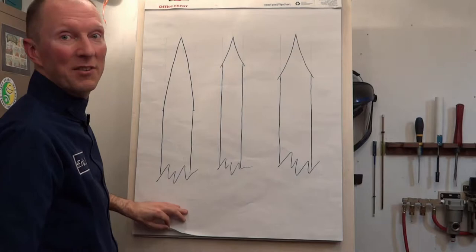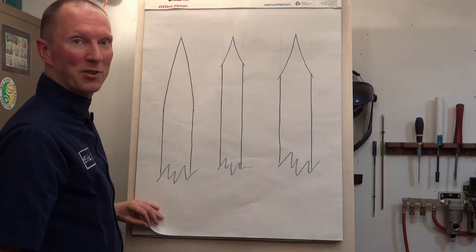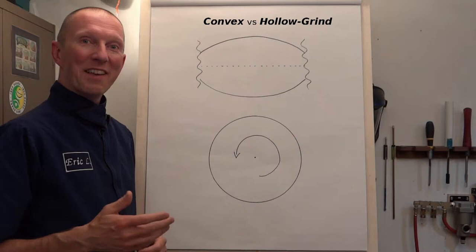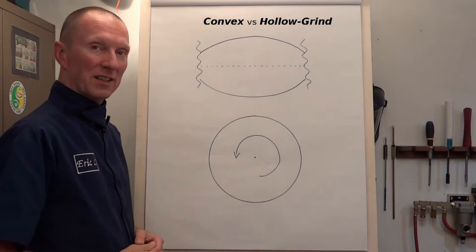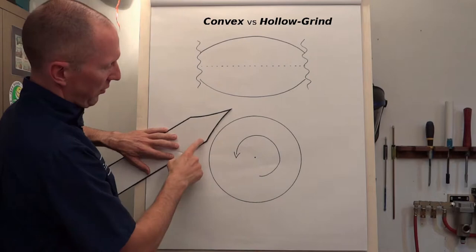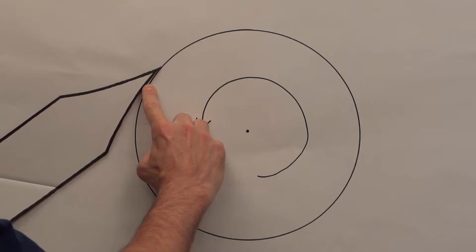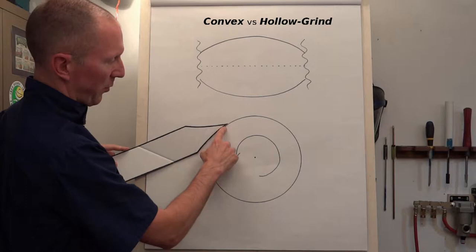Let's take a look at some diagrams to highlight the differences between the convex bevel and the hollow grind bevel. On the outside of a cylinder, a hollow grind bevel is going to glide against the bevel, draw the edge back until the edge engages with the wood, and the geometric and functional angle at this point are the same.